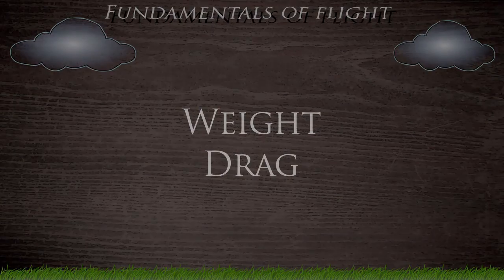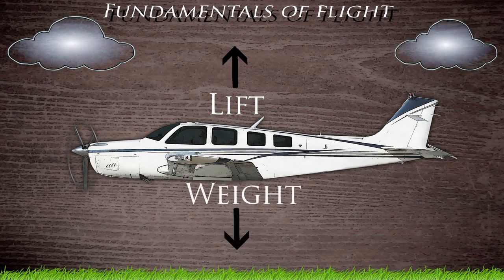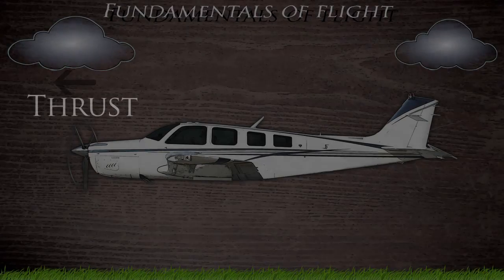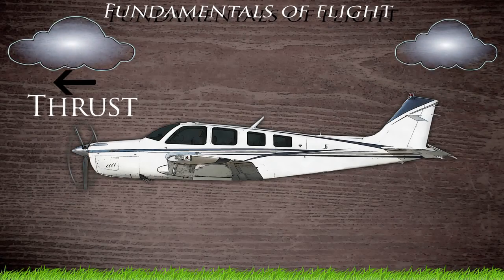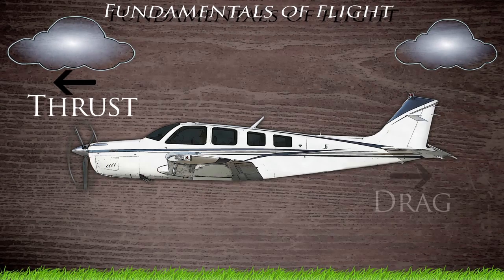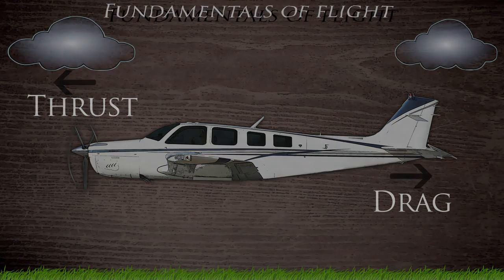Let's explain that a bit further. If we have lift working to pull the aircraft into the air, the aircraft's weight is certainly working to pull it back down towards the ground. On the other hand we have thrust which is pulling us forward, giving us the power to climb and cruise, yet we have drag which is produced from the entire aircraft, even the wings that are giving us lift.